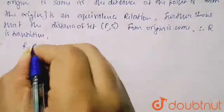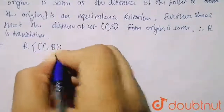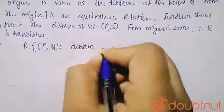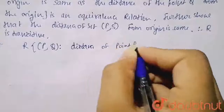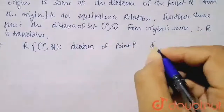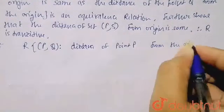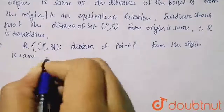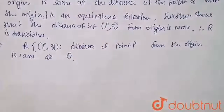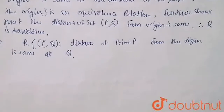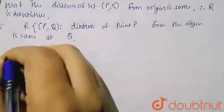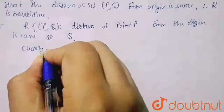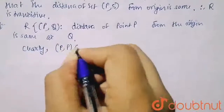So here we can see that for the pair (P, Q), the distance of point P from the origin is same as the distance of point Q from the origin — both are the same. Now, for reflexivity, we can clearly see that (P, P) belongs to R.